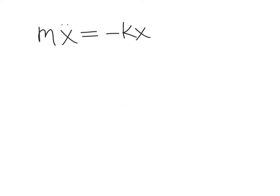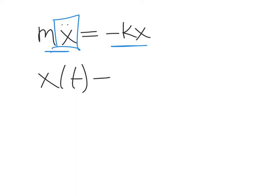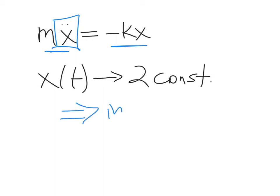Recall the expression for Hooke's Law: the mass times the acceleration is equal to the Hooke's Law force, which is minus kx. This is the second-order derivative in time, and so when we have a solution for x as a function of t, it's going to involve two constants for the motion.